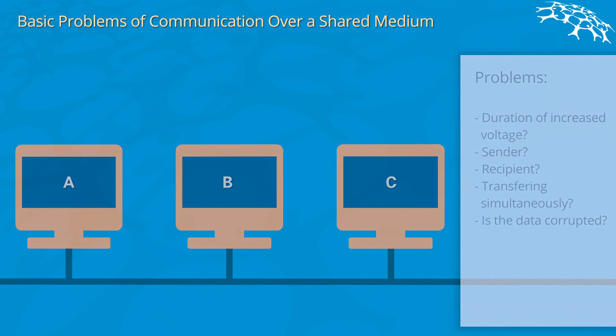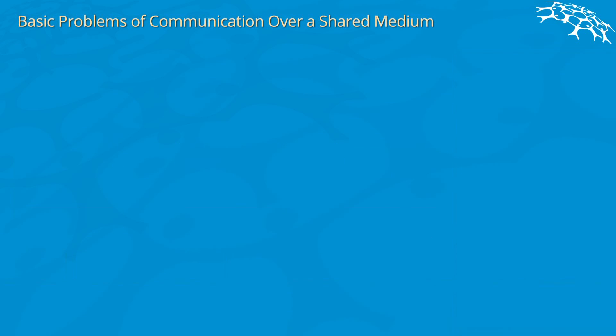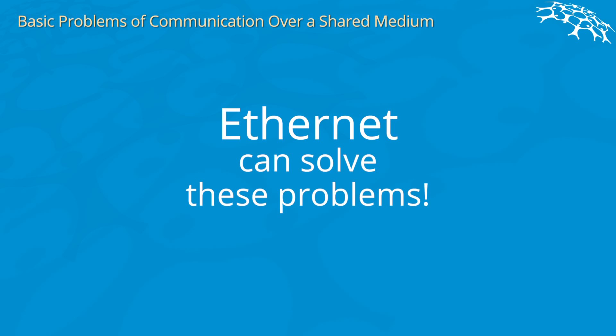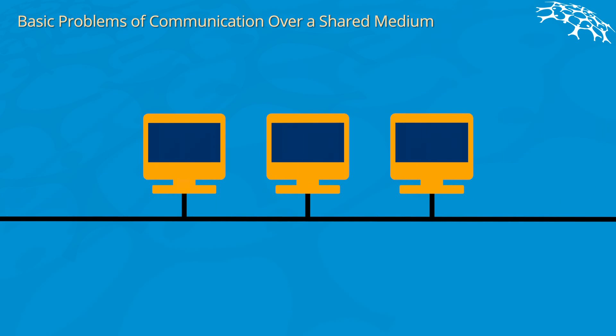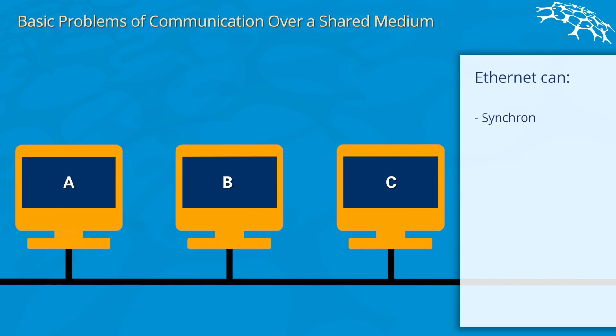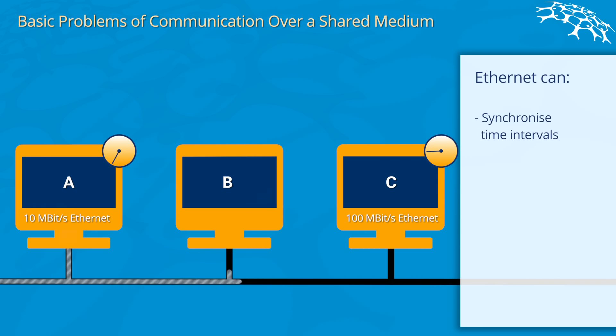In order to solve all these problems, Ethernet as a protocol was developed. What Ethernet can do is it can synchronize time intervals. Let's assume computer A sends data at 10 megabits per second, and computer C has an interface which allows 100 megabits per second. Ethernet as a protocol will be able to synchronize the clocks between those two devices.